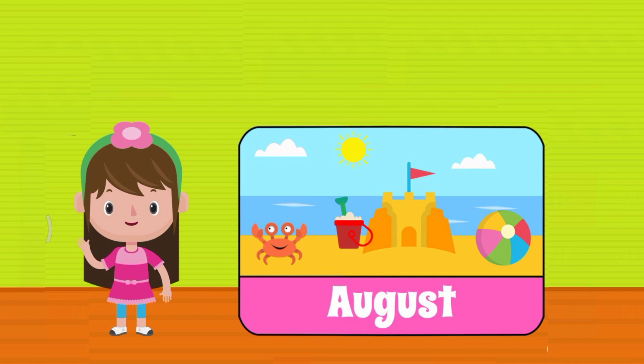August, the eighth month of the year, containing 31 days, coming after July.